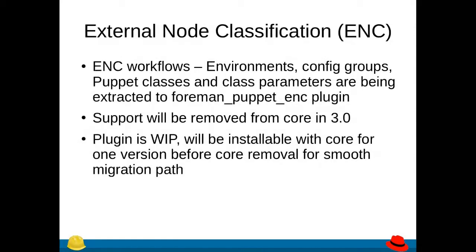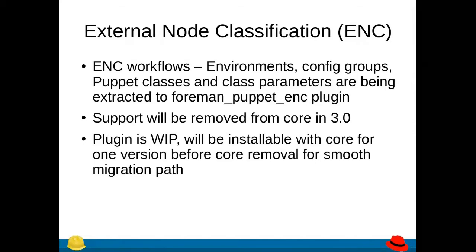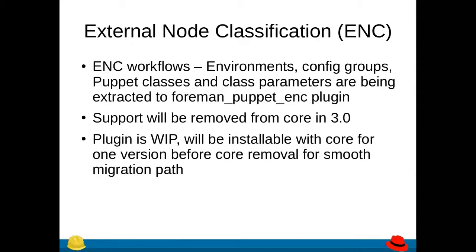Second, and this is probably the biggest change, is the external node classification. Puppet users are aware that Foreman serves as an external node classifier for the Puppet server. That means that when a host reports to the Puppet server, Foreman will tell the Puppet server which environment that host belongs to, which Puppet classes should be assigned to it, and what values the various class parameters get for that Puppet class. This workflow is going to be extracted into a plugin called Foreman Puppet ENC and removed from core.